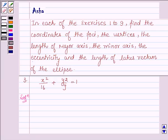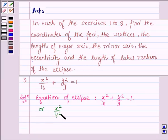Now, the given equation of the ellipse is x square upon 16 plus y square upon 9 is equal to 1. Or, it can further be written as x square upon 4 square plus y square upon 3 square is equal to 1. Now, here the denominator of x square upon 16 is greater than the denominator of y square upon 9, that is 9.